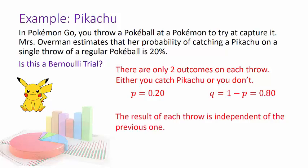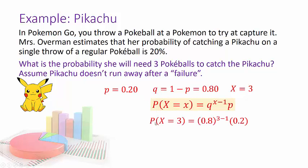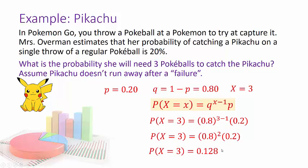What is the probability I'll need exactly three Pokéballs to catch my Pikachu? I throw, fail, throw again, fail, throw a third time and succeed. So P = 0.2, Q = 0.8, X = 3. Using the geometric formula: P(X = 3) = 0.8^(3−1) × 0.2 = 0.8² × 0.2 = 0.128. There's about a 12.8% chance of catching the Pikachu with the third ball.